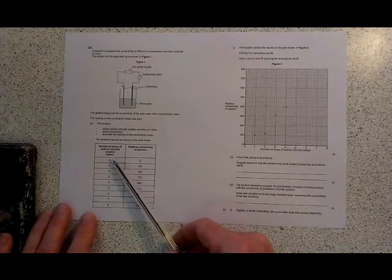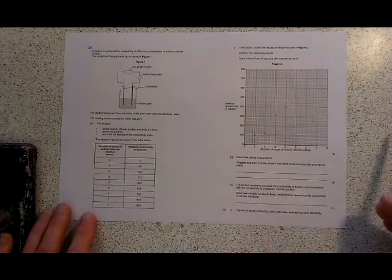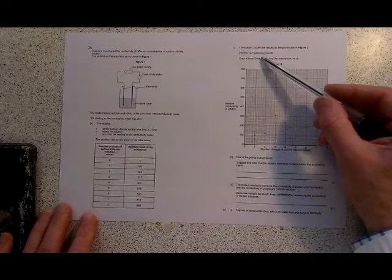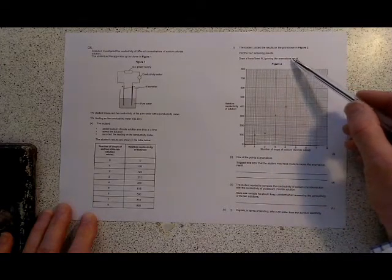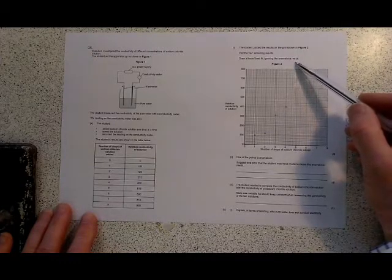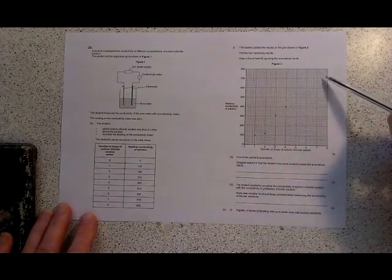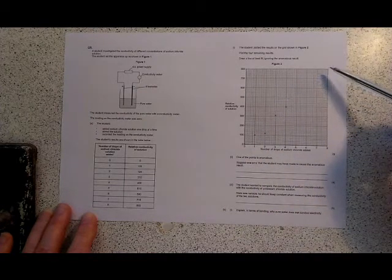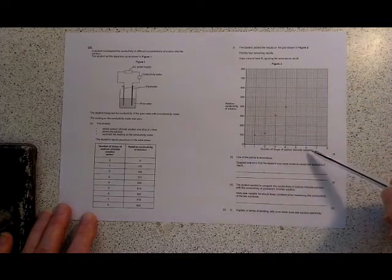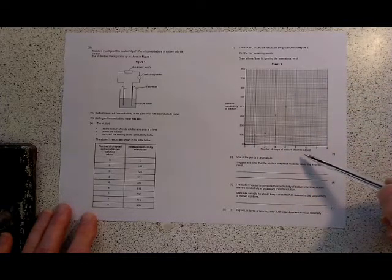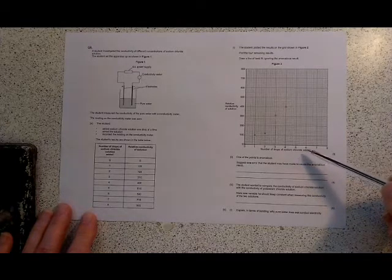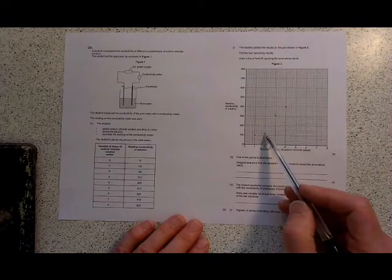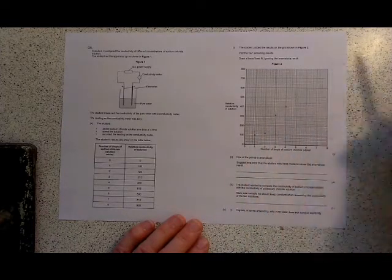There's a table of results adding one to eight drops of sodium chloride and you get a graph. The first part was to plot the remaining results, draw a line of best fit, ignoring the anomalous result. You get a straight line passing through the origin because it's directly proportional. The conductivity is directly proportional to the amount of sodium chloride. Double the number of ions, it conducts electricity twice as well. One of the points is anomalous, the one at two. It's much below the straight line.